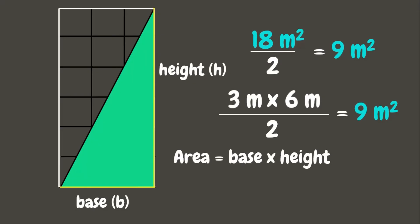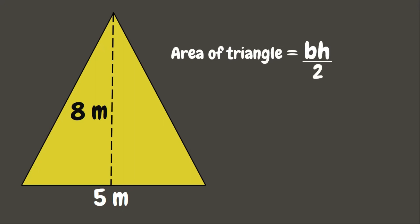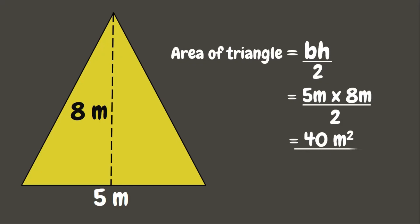Therefore, the formula for the area of a triangle is base times height divided by two, or (b × h) / 2. Let's try this formula: we have a triangle whose height measures eight meters and base measures five meters. Five meters times eight meters equals 40 square meters, divided by two equals 20 square meters — and that is the area of the triangle.